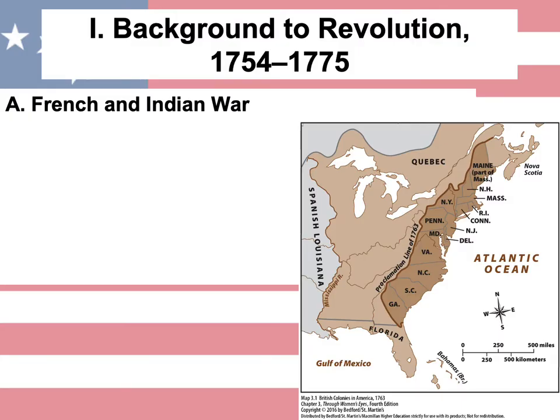The background to the Revolution was the French and Indian War. Multiple times the French and the British fought for power in Europe and also in North America. By 1754, fighting broke out for the fourth time between the English and their Native American allies, and the French and their Native American allies. At the end of the day, it was a British victory over France.